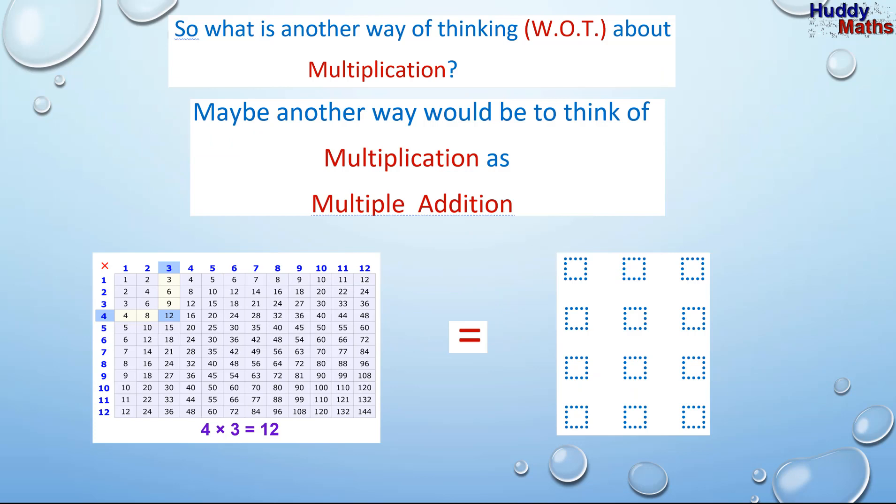So, what is another way of thinking about multiplication? Maybe another way would be to think of this word. Multiplication as Multiple Many Additions. So, instead of adding stuff up a lot, we can use Multiplication, Multiple Addition. And it's a good way. It works very well in the real number set, which is what we're dealing with now. And it's very handy for later on.